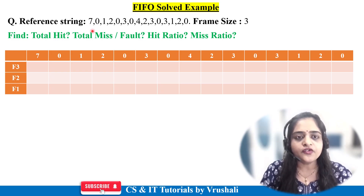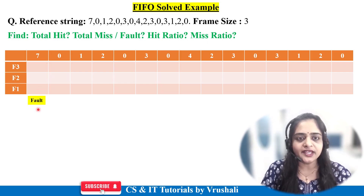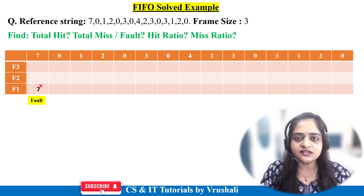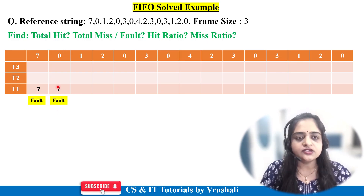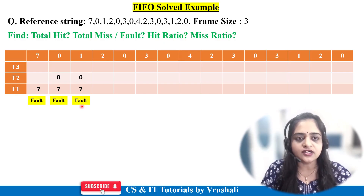First, the CPU demands page 7. Memory is empty, so 7 is not present — page fault occurs. The OS fetches 7 into main memory. Next is page 0: not present — page fault, 0 is added. Next is page 1: not present — page fault, 1 is added. Now RAM holds 7, 0, 1 in frames F1, F2, F3.